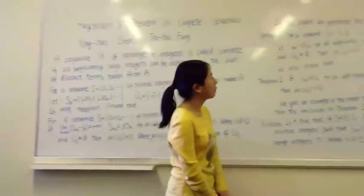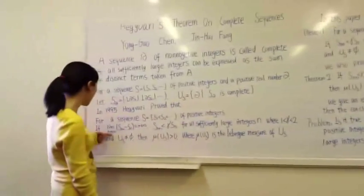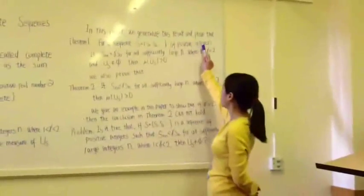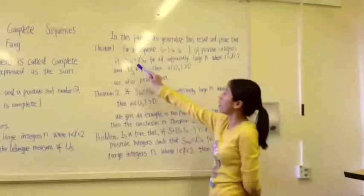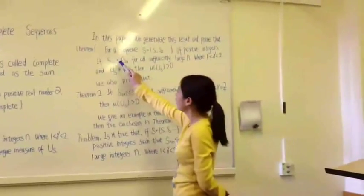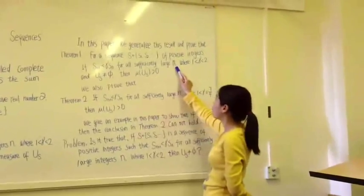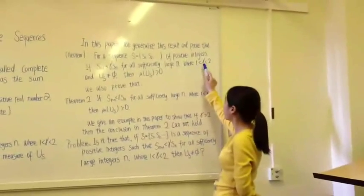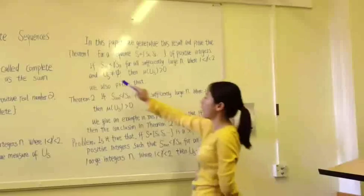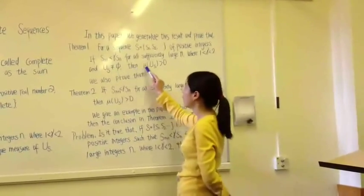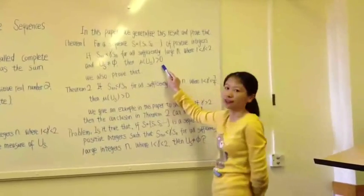In this paper, we removed the condition and proved that for a sequence S of positive integers, if S(n+1) is less than gamma times Sn for all sufficiently large n, where gamma is larger than 1 and less than 4, then the measure of mu S is larger than 0.